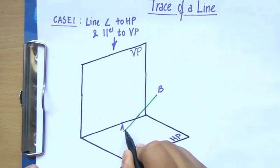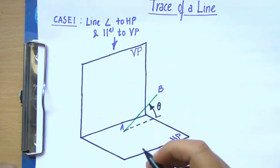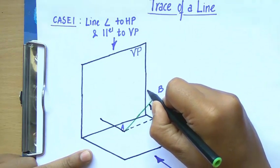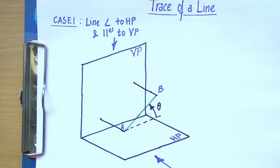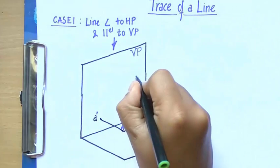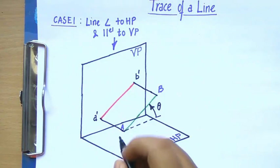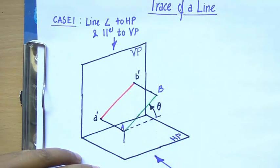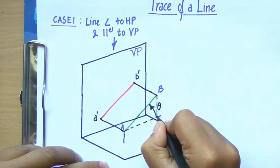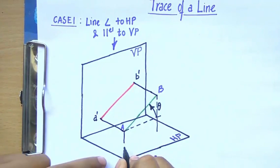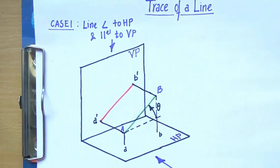This angle is represented by theta. Looking at this line from the front, on producing these lines they intersect the vertical plane — this point is referred to as A' (a dash) since it is the front view, and this is B' (b dash) since it is the front view. The line A'B' represents the front view. Drawing projector lines downward, they intersect the horizontal plane — this point is A (top view of point A) and this is point B.